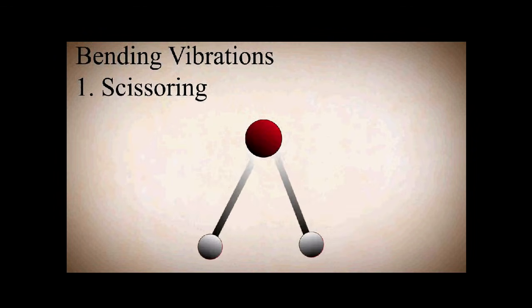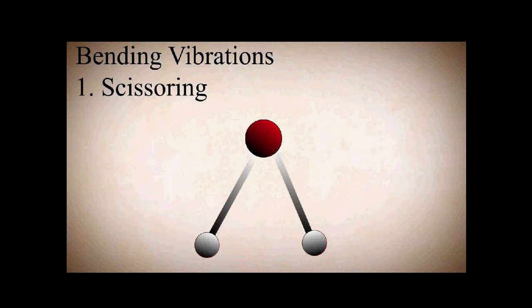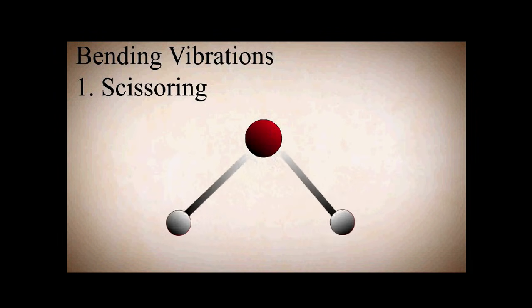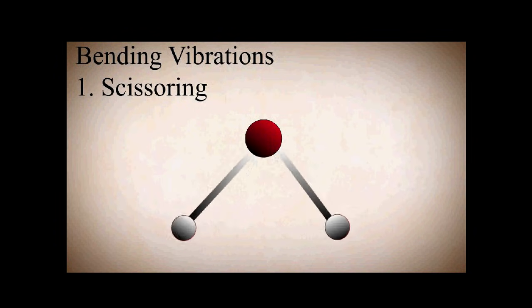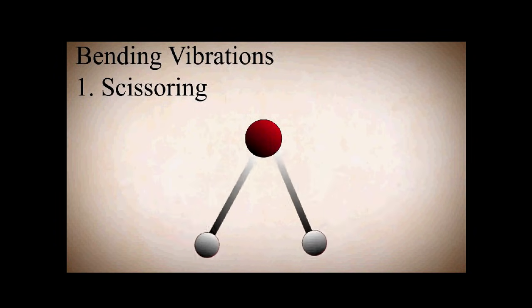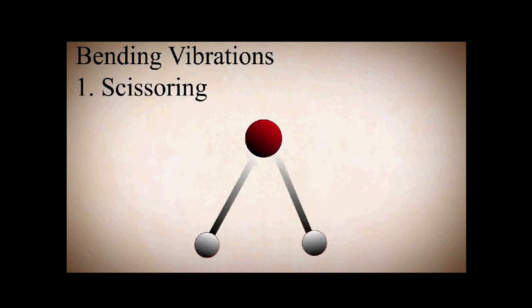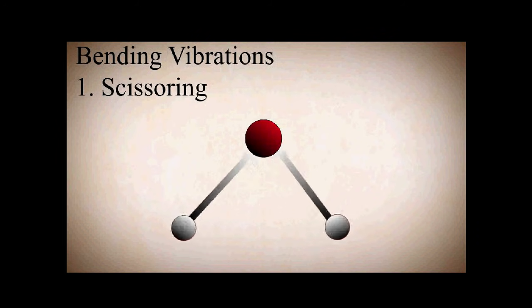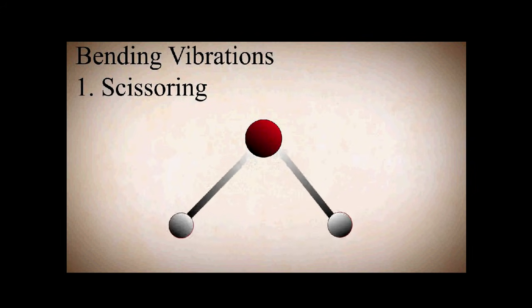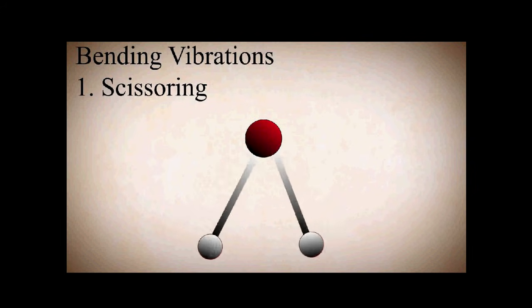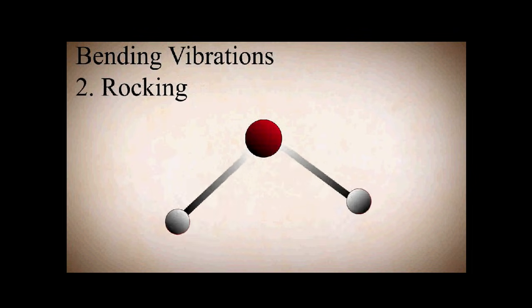The second major type is bending vibration, which has four types. The first one is scissoring. Scissoring vibration is an in-plane vibration. Here both atoms are coming towards each other and simultaneously going away from each other, but both atoms remain in the same plane. That is why scissoring vibration is an in-plane vibration.